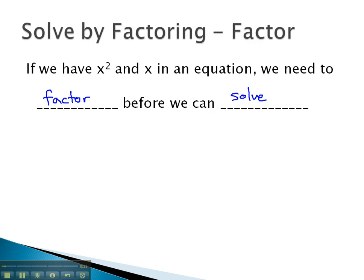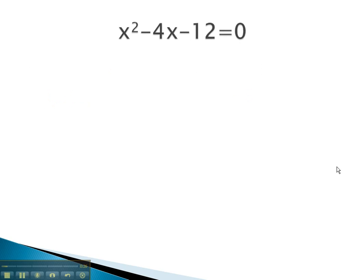If the factors both equal zero, then one of the factors must be zero. Considering this equation, before we can solve it for x, we first must factor it.